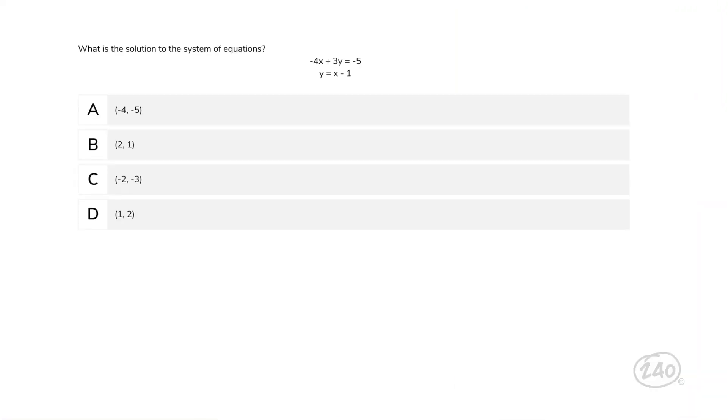Moving on to the algebra section. What is the solution to this system of equations? Negative 4x plus 3y equals negative 5, and y equals x minus 1. Substitution is the easiest method to use to solve this system because one equation has a variable that is isolated. So, we can substitute in x minus 1 for y.